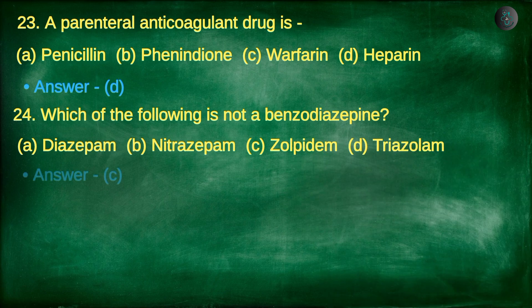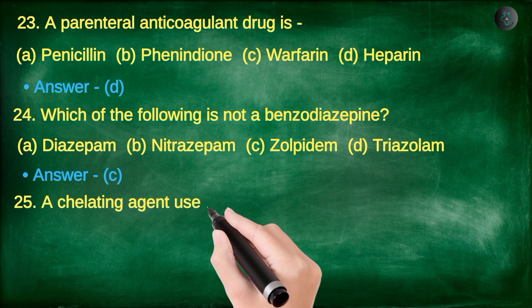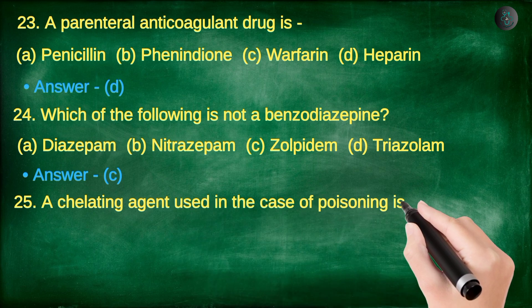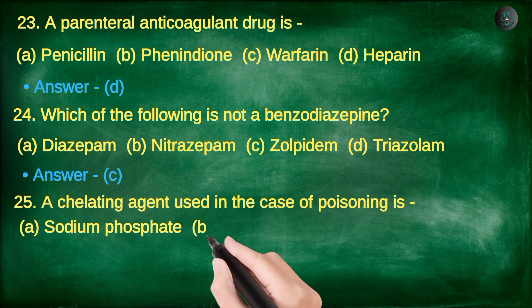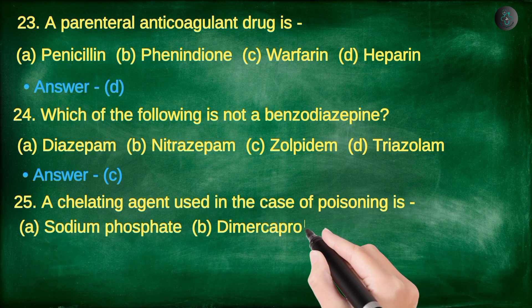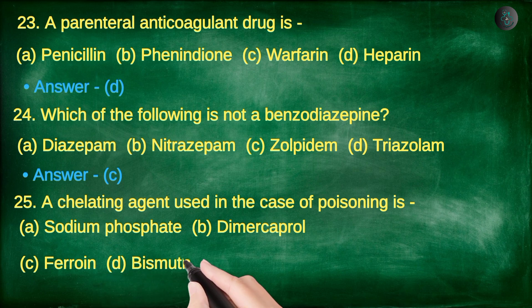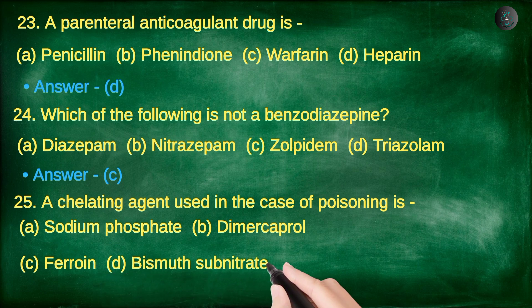A chelating agent used in the case of poisoning is: A. Sodium phosphate, B. Dimercaprol, C. Ferroin, D. Bismuth subnitrate.